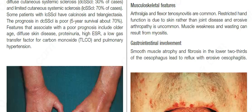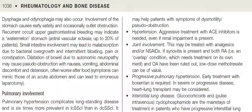Gastrointestinal involvement: smooth muscle atrophy and fibrosis in the lower two-thirds of the esophagus lead to reflux with erosive esophagitis. Dysphagia and odynophagia may also occur. Involvement of the stomach causes early satiety and occasionally outlet obstruction.